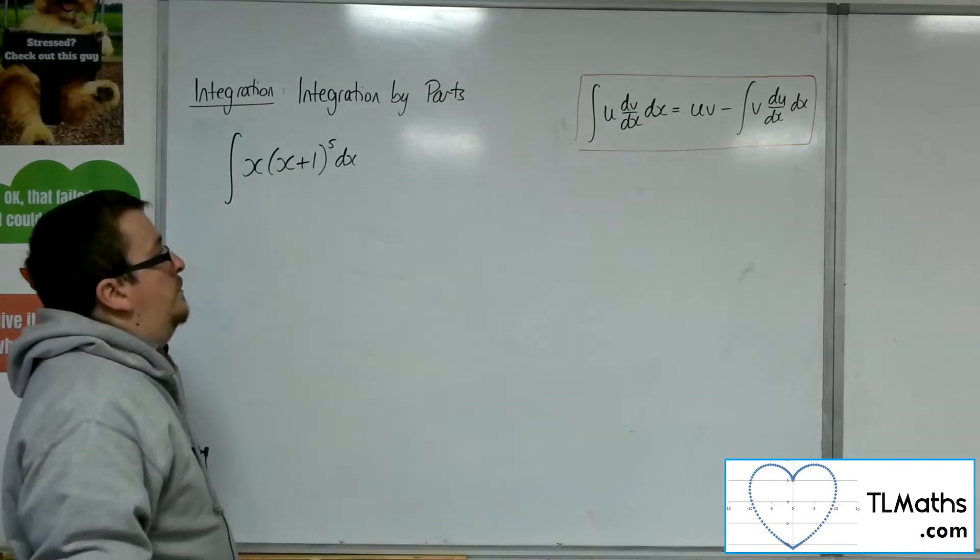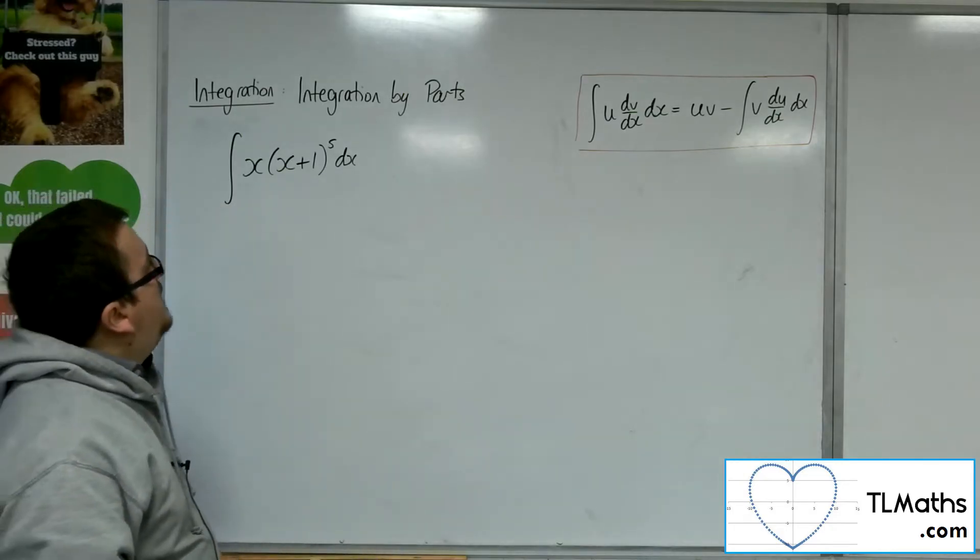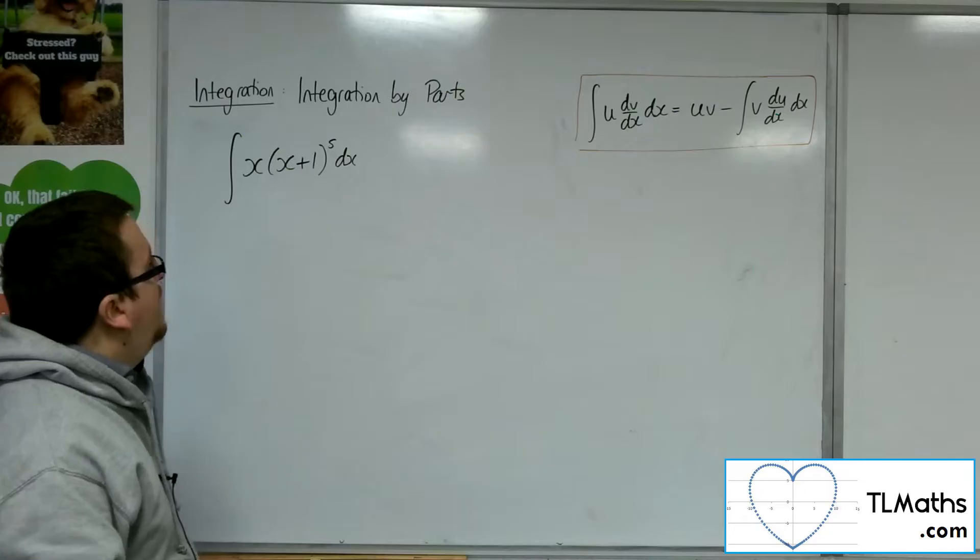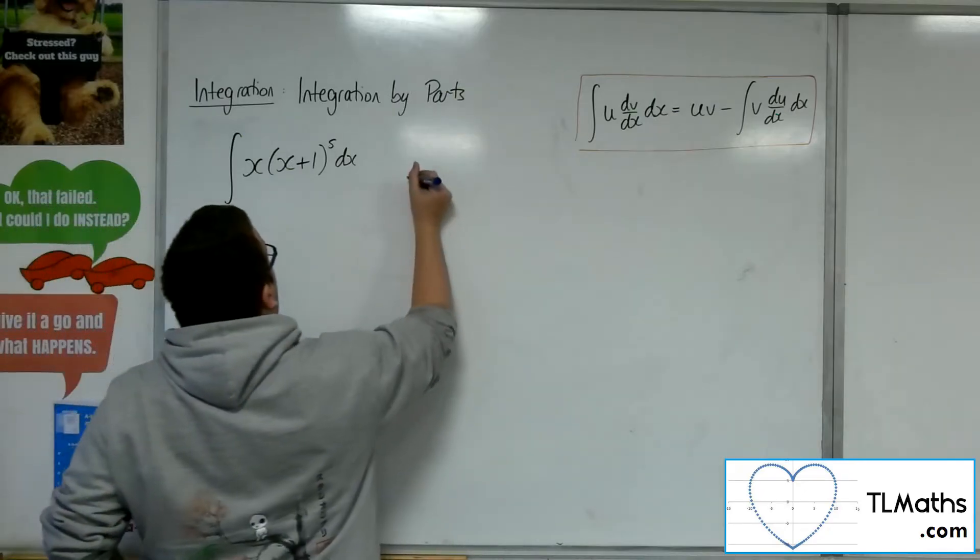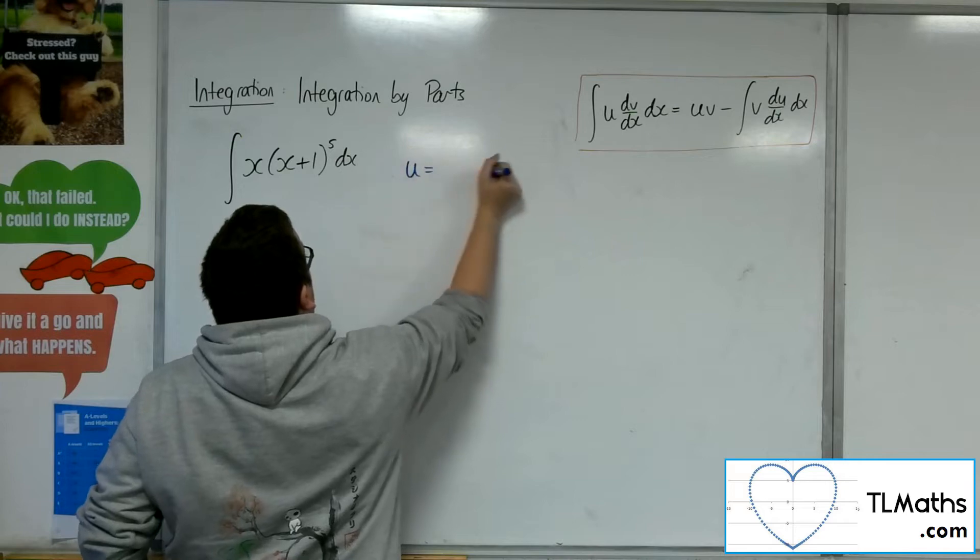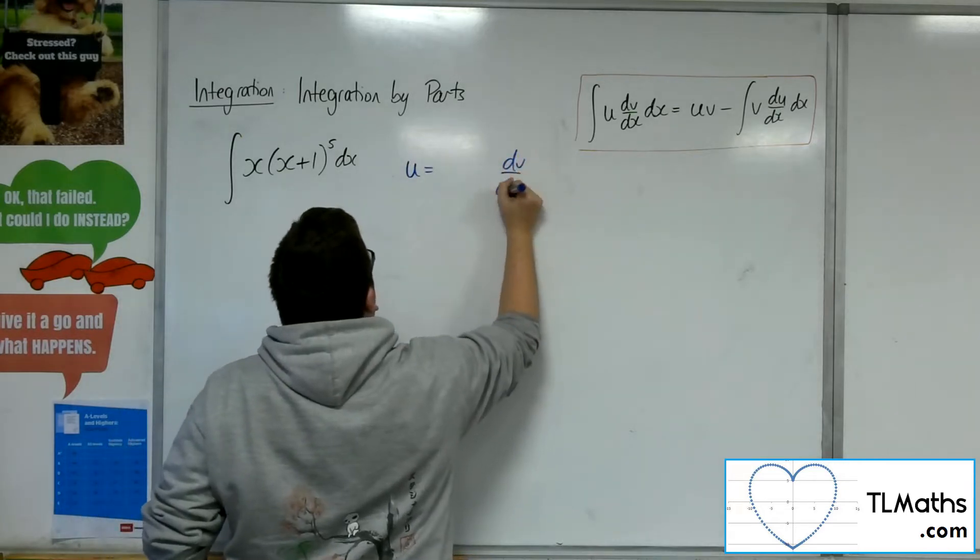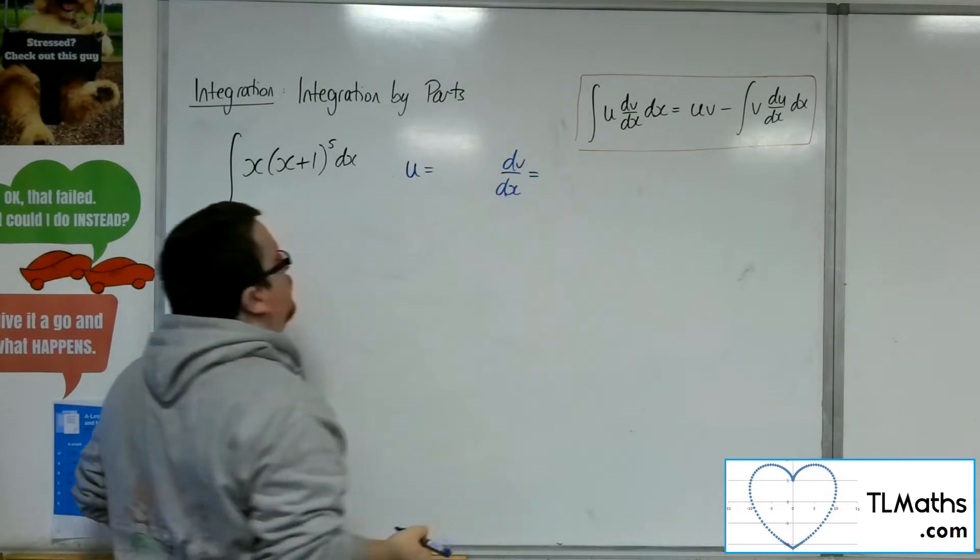Now, for the LIATE rule, you might be wondering, which is going to be the u then? Is it the x or is it the x plus 1 to the 5? OK, so that's a good question and not immediately obvious as to what the answer is there.